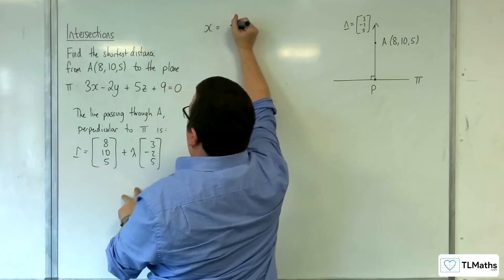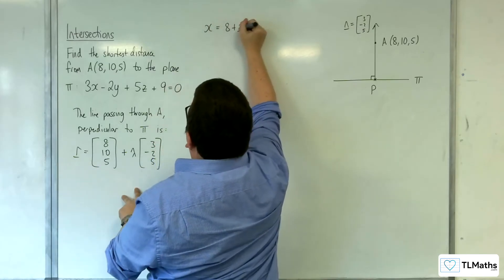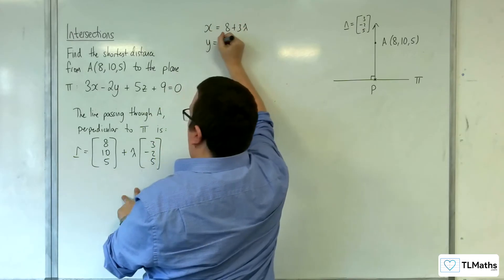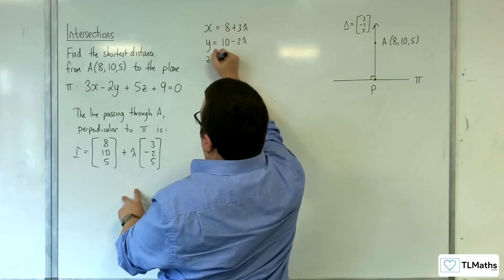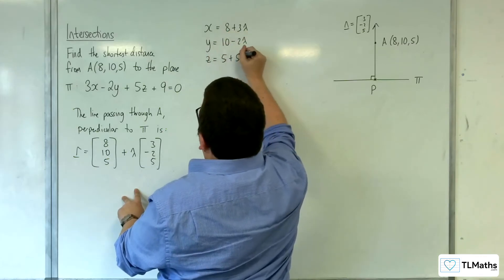So x = 8 + 3λ, y = 10 - 2λ, and z = 5 + 5λ.